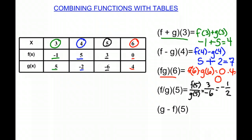And our last one is (g - f)(5). So we're doing g(5) minus f(5). And if we look, our g(5) is negative 6, and we're subtracting our f(5), which is 3, which is going to be negative 9.